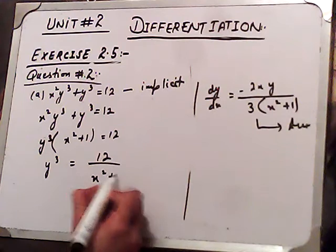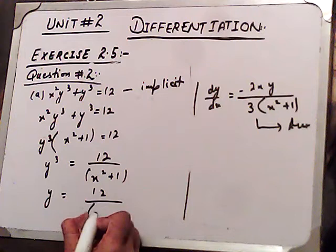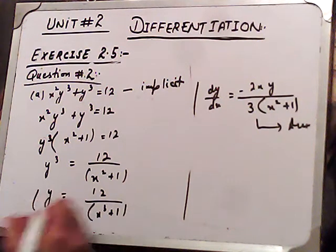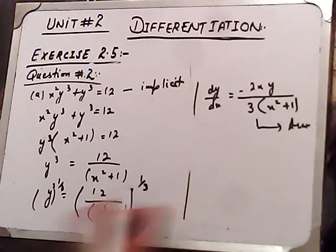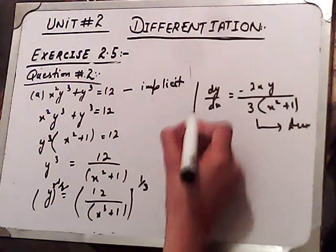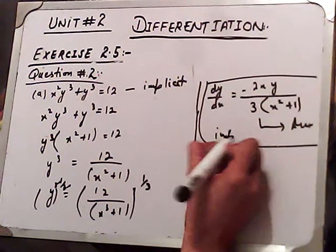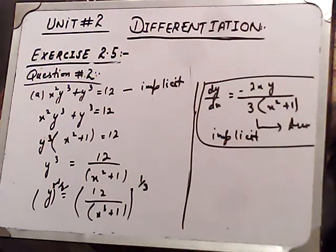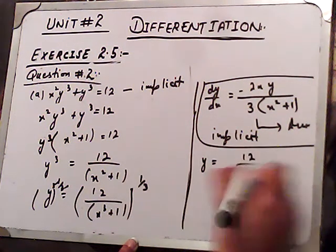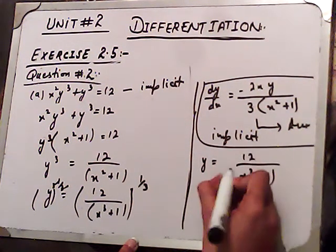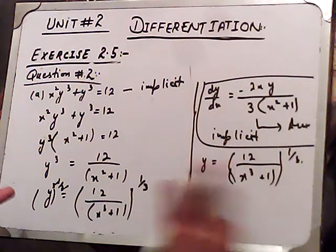Raising both sides to the power of 1/3: the cube cancels on the left, giving y equals 12 divided by (x cubed plus 1), raised to the power of 1/3. Now we have created y as a function of x — this is the explicit form. Now we find the derivative from this explicit form.